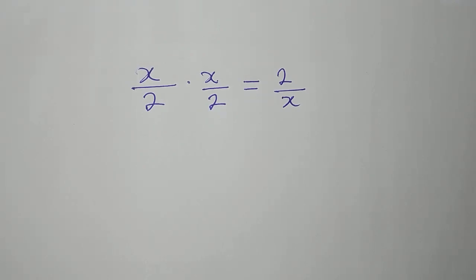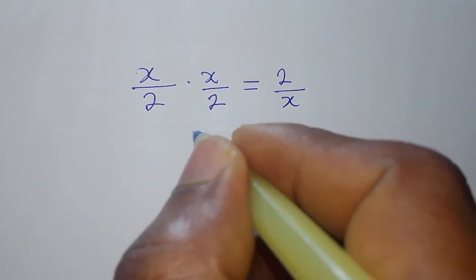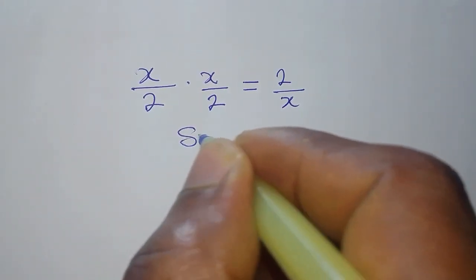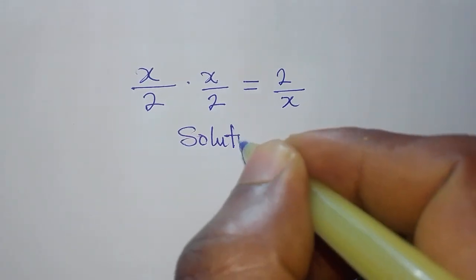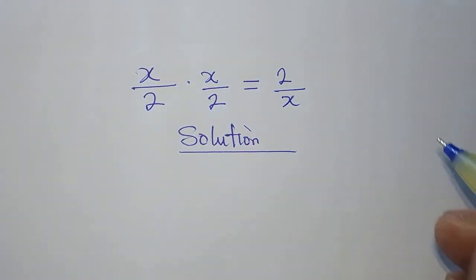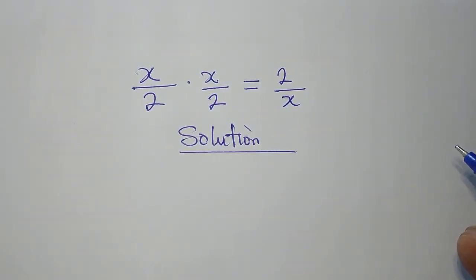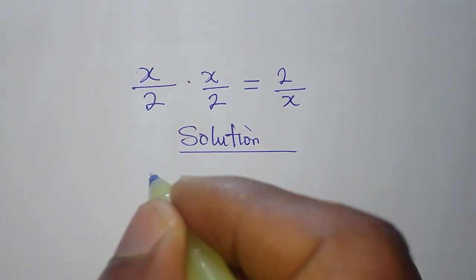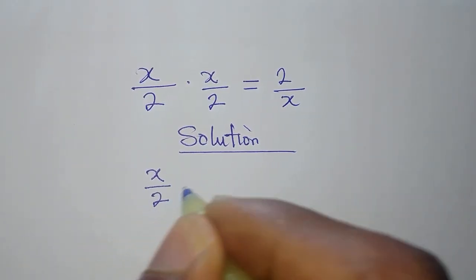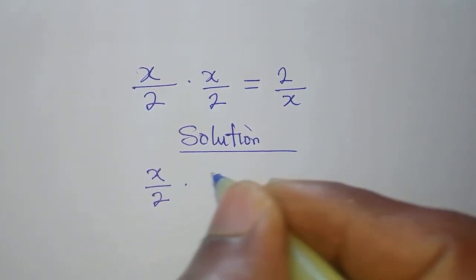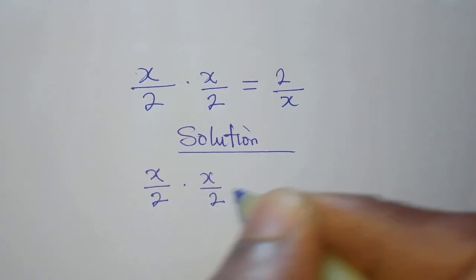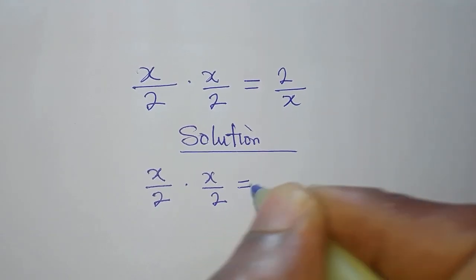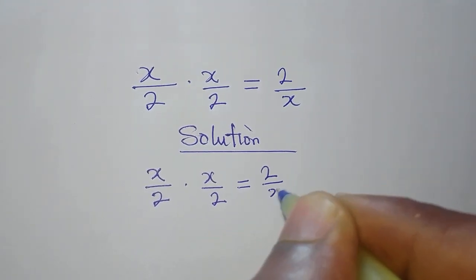Hello everyone. Let's provide a solution to this problem here: x over 2 times x over 2 equals 2 over x.